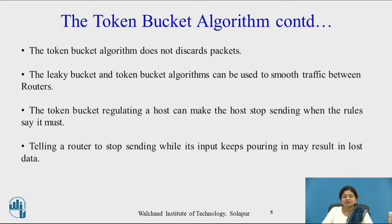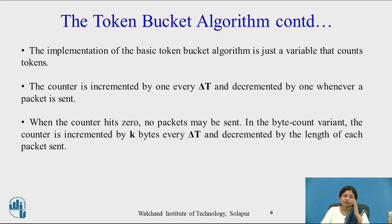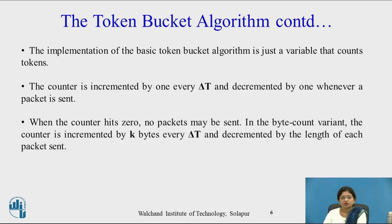The Token Bucket Algorithm does not discard packets. Both the Leaky Bucket and Token Bucket Algorithms can be used to smooth traffic between routers. The Token Bucket regulating a host can make the host stop sending when the rules say it must stop. The implementation of the basic Token Bucket Algorithm is just a variable that counts tokens. The counter is incremented by 1 every delta-T and decremented by 1 whenever a packet is sent. When the counter hits 0, no packets may be sent.